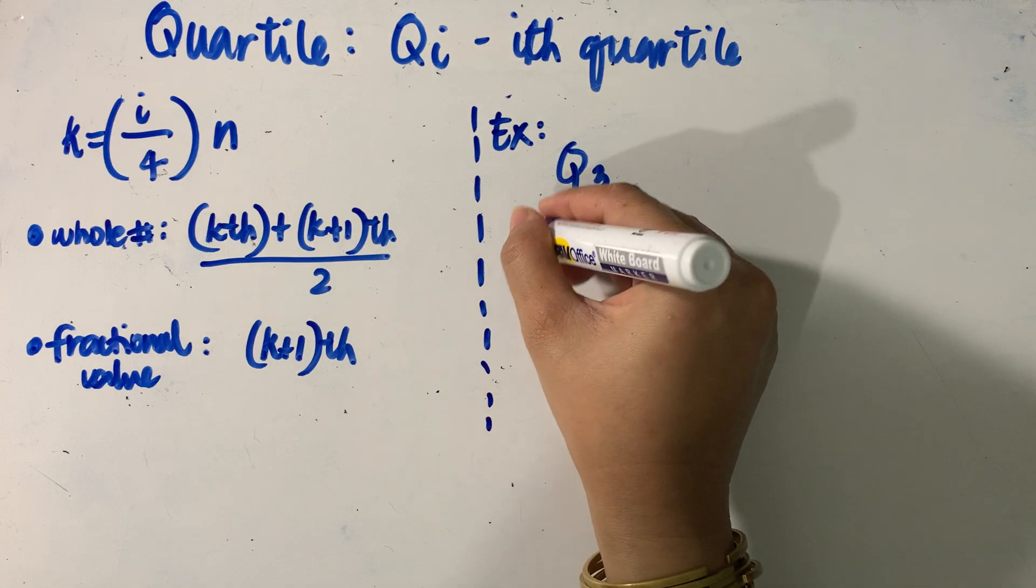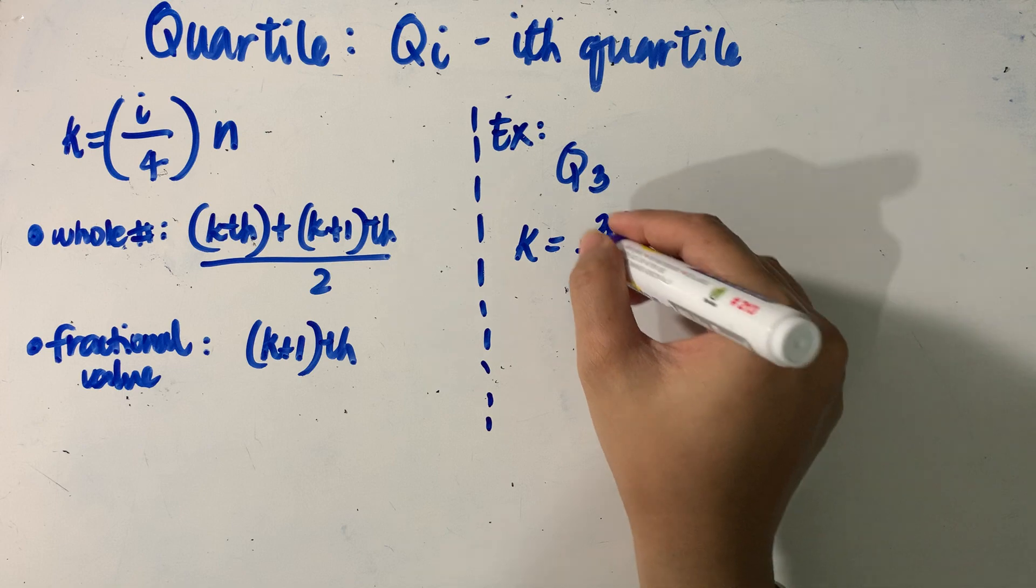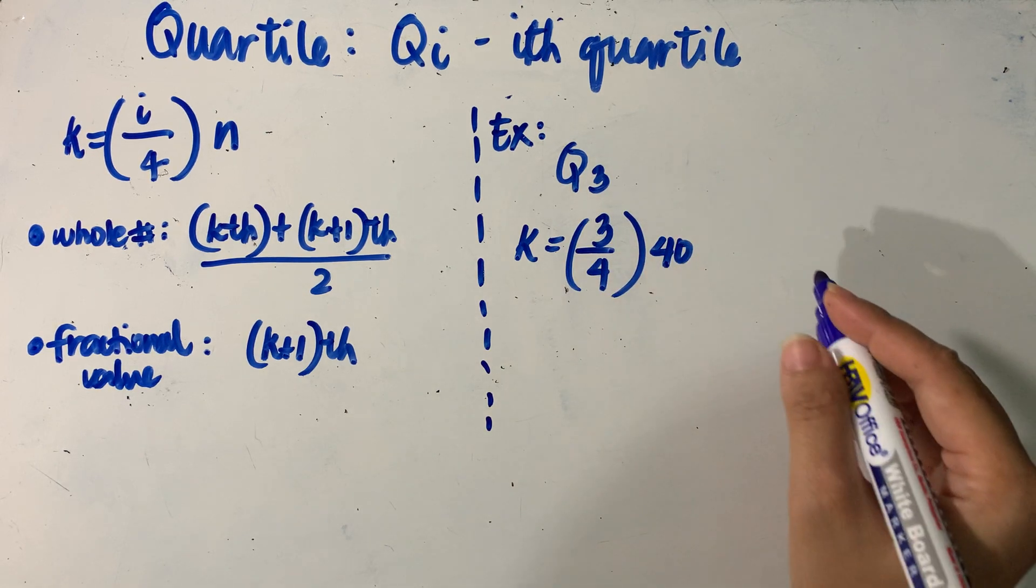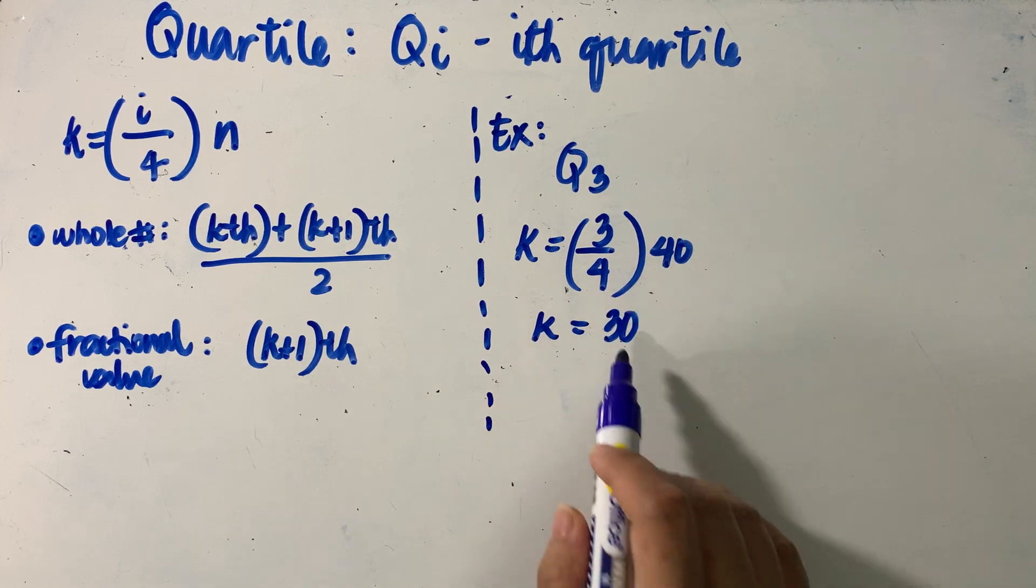First, we have to compute for the value of k, and the value of k is given by three over four, and we multiply it by our n, which in this case is equal to 40. So solving for the value of k, what we will have is k is equal to 30.